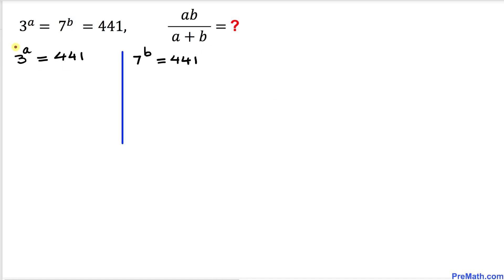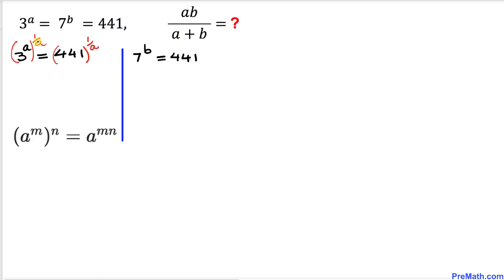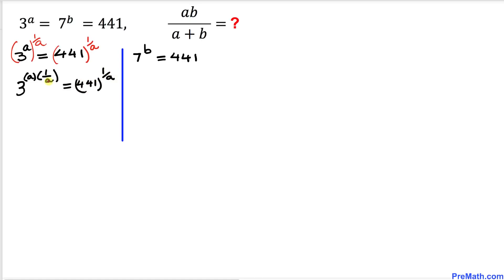I want to isolate 3 by itself, so I'm going to take the power 1/a on both sides. On the left, 3^a raised to the power 1/a equals 3^(a × 1/a), and since a and a cancel, we get 3 = 441^(1/a).